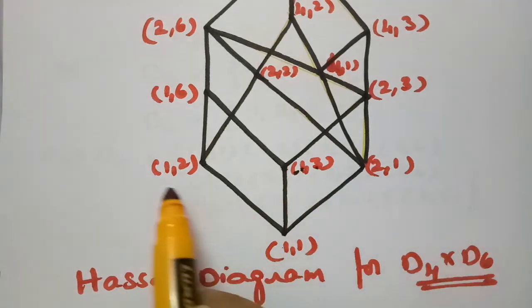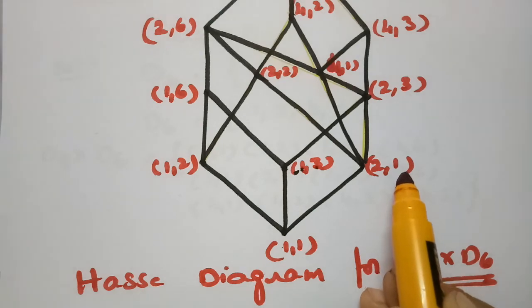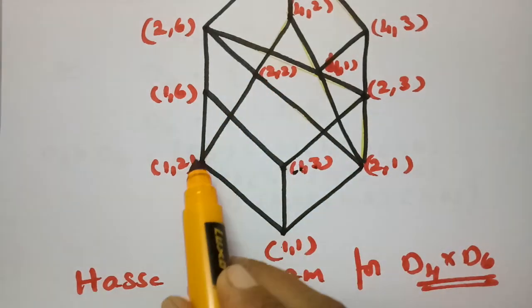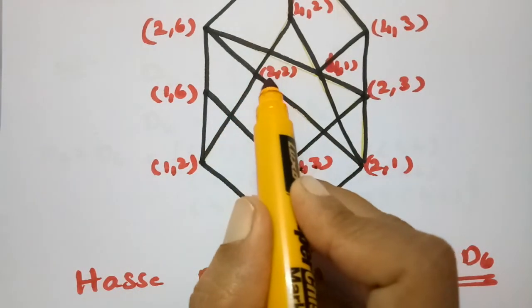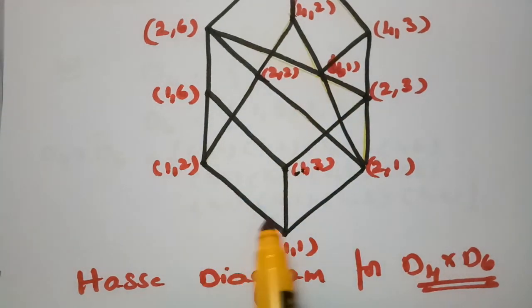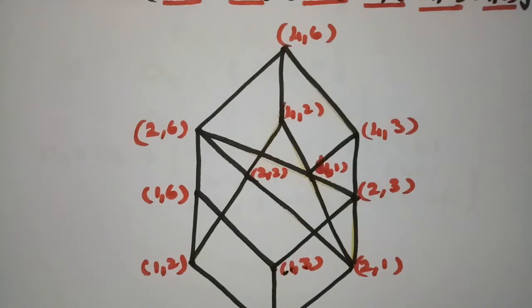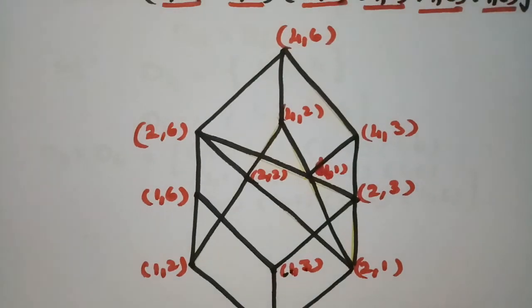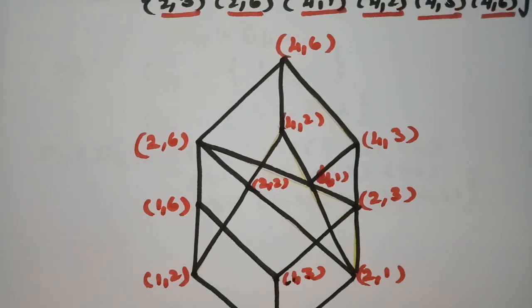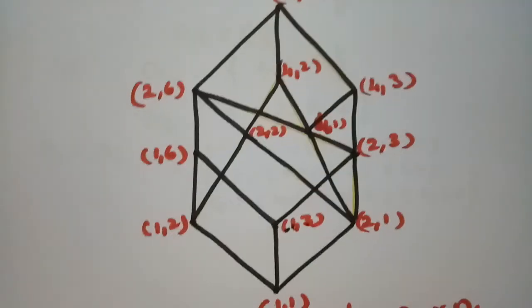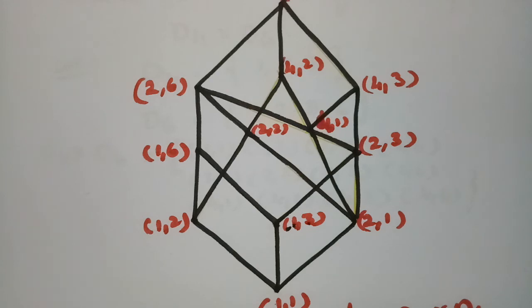This is the Hasse diagram for D4 direct product D6. This follows the divisibility rule and forms a valid lattice. It is simple once you practice.